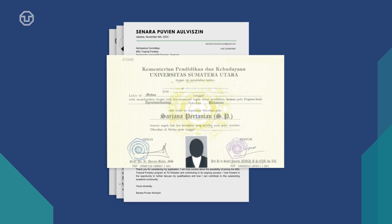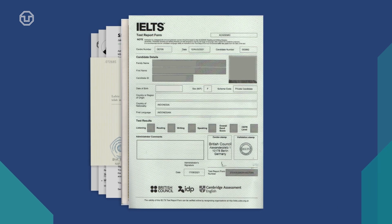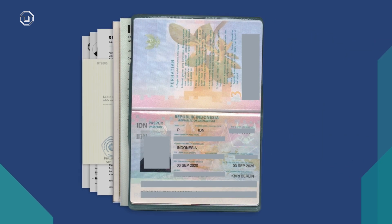You will also need to provide your university degree certificate and your academic transcripts in English or in German. If your language of instruction was in another language, you will need to provide certified translations. Next, you need to submit your secondary school or high school certificate, and then your English proficiency certificate — you can use IELTS, TOEFL, or a medium of instruction certificate. You also need to submit a copy of your passport or national ID in PDF format, and one recent passport-size photograph in JPEG format.